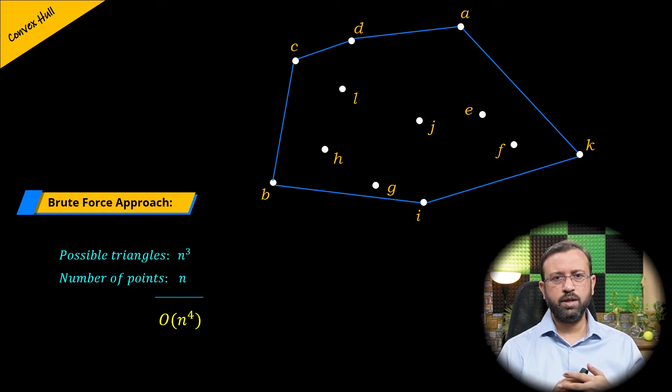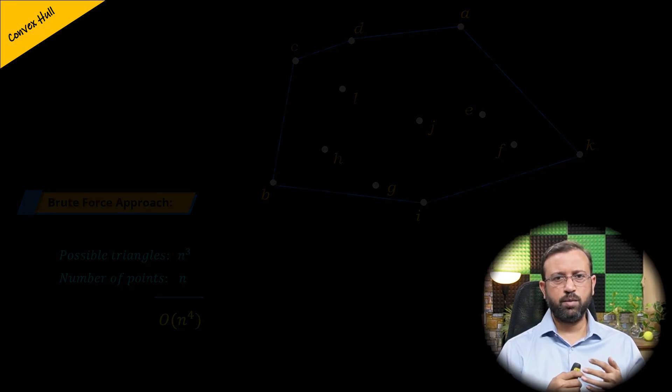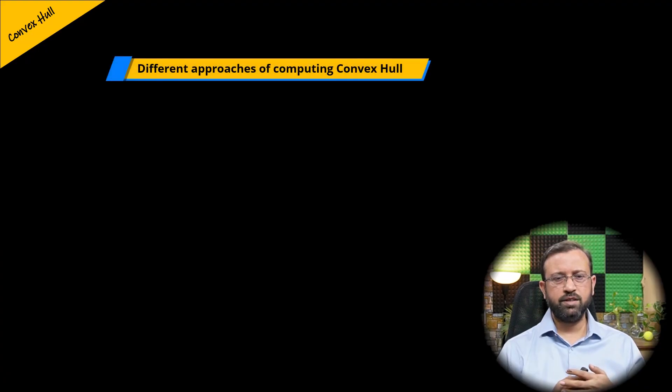Now better performance can be achieved using the divide and conquer approach. Actually there are three different approaches that are used to compute convex hull and are better than the brute force method.